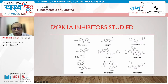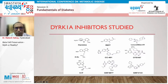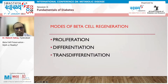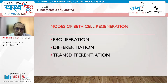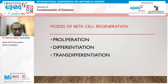I'll show some data from studies on harmine. Beta cell regeneration can happen through proliferation of existing beta cells, through re-differentiation of de-differentiated beta cells back toward the beta cell pathway, or through trans-differentiation of other cell lines toward beta cell lineages. These are the various ways we can regenerate beta cells.